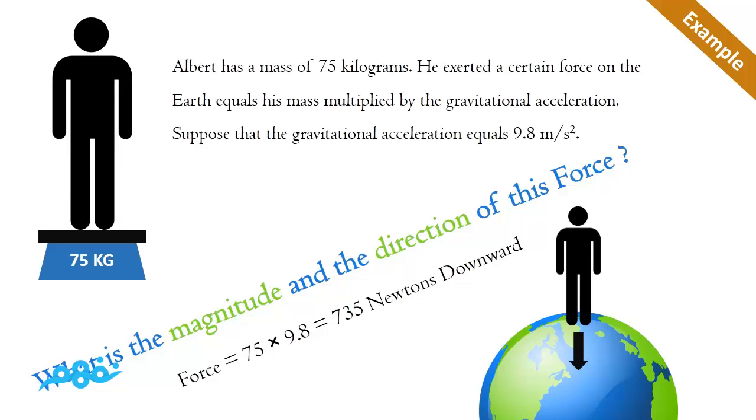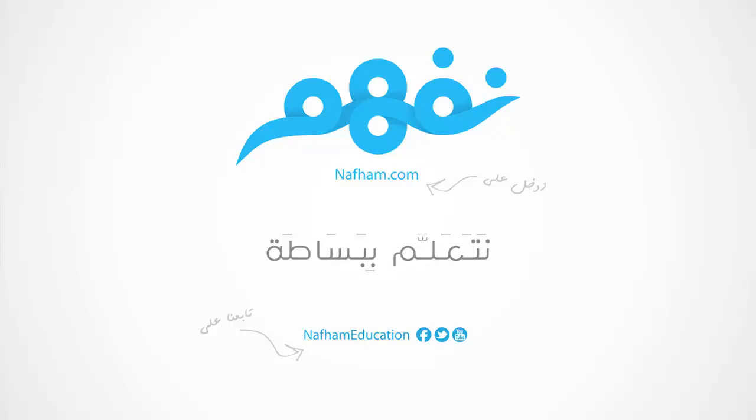We can apply the formula: F (force) equals mass (m) times a (gravitational acceleration), and it will be 735 Newtons in the downward direction. Thanks for watching, and hope you enjoyed!